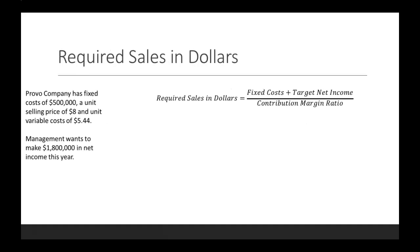Let's first work on required sales in dollars. We have our equation right there — it's fixed costs plus target net income, all divided by your contribution margin ratio. We have our fixed costs, that's $500,000, and we have our target net income, that's $1,800,000.